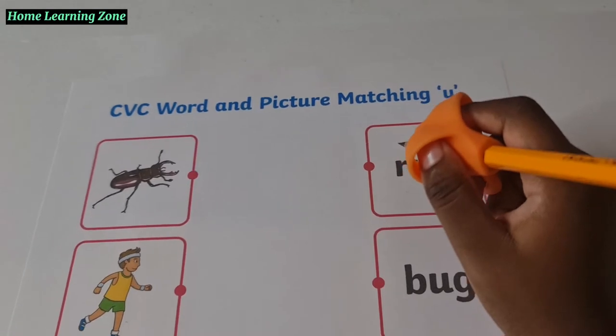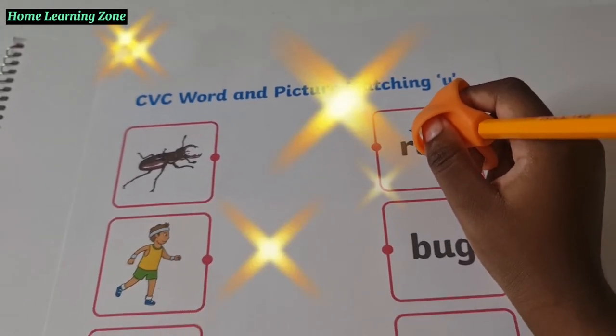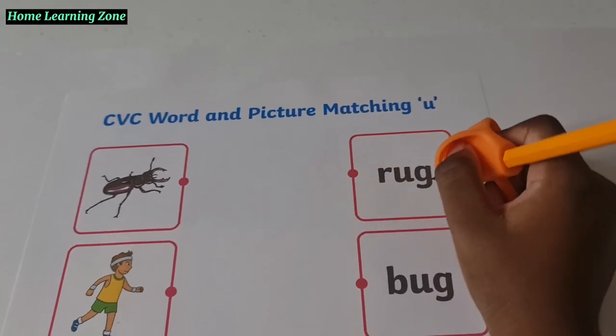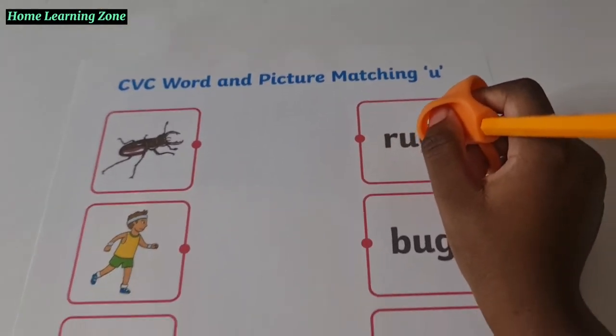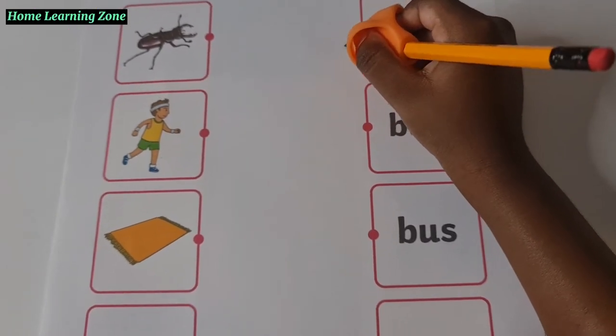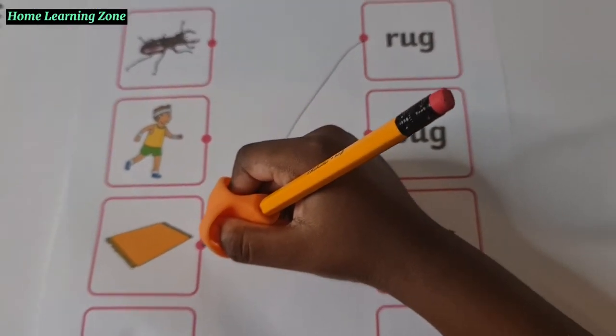Rug. You didn't even sound it out, but that's good. Sound it out. Let me hear you still. R. U. G. Rug. Good. Go ahead and match it to Rug. Match it to the picture. Good job.